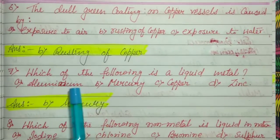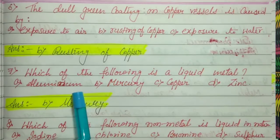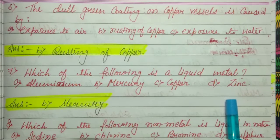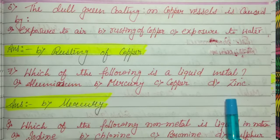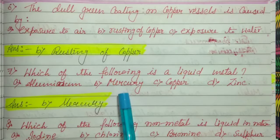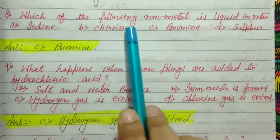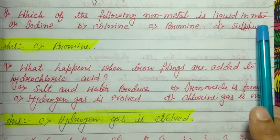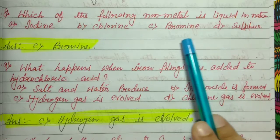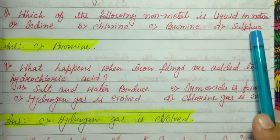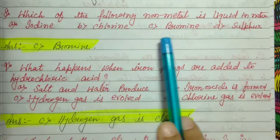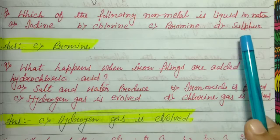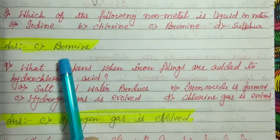Question number 7: Which of the following is a liquid metal — aluminium, mercury, copper, or zinc? Mercury is the metal that is liquid at room temperature. Question number 8: Which of the following non-metals is liquid in nature — iodine, chlorine, bromine, or sulfur? Non-metals are generally solid or gaseous, but the exception is bromine. The right answer is bromine.